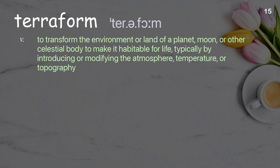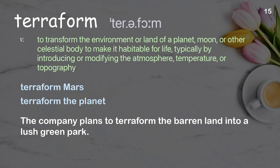Terraform: to transform the environment or land of a planet, moon, or other celestial body to make it habitable for life, typically by introducing or modifying the atmosphere, temperature, or topography. Examples: terraform Mars, terraform the planet. The company plans to terraform the barren land into a lush green park.